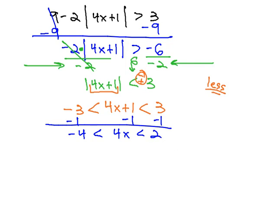Finally, to get the x alone, we can divide all three parts by 4, which gives us negative 1 is less than x, which is less than 1 half.